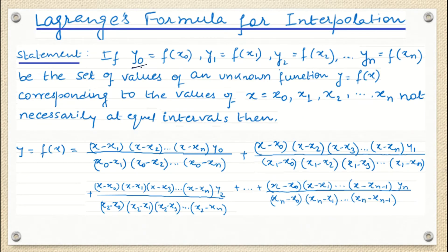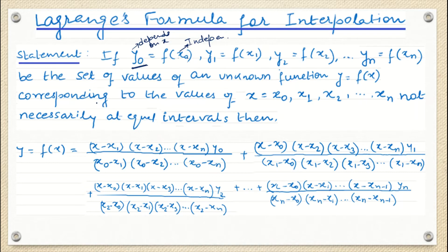Here y-naught is f(x-naught), meaning x is the independent variable and y depends on x. y is a function of x, and different arguments are there: x-naught, x1, and so on. So f(x-naught) is y-naught, f(x1) is y1, and so on. These are the set of values of the unknown function y = f(x). We are not worried about whether they are equally or unequally spaced — we have the same formula and can use Lagrange's formula for interpolation.